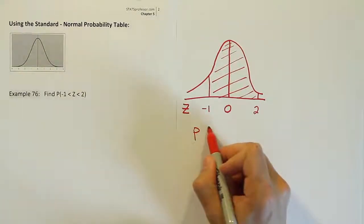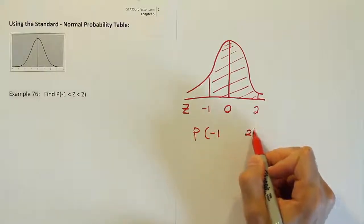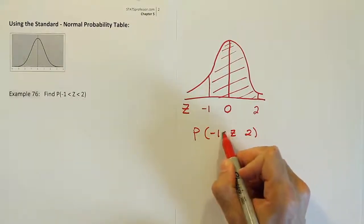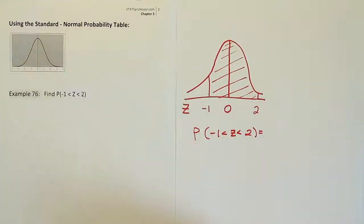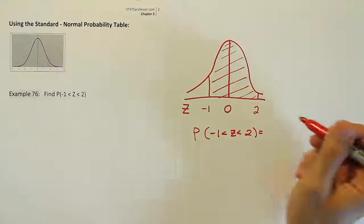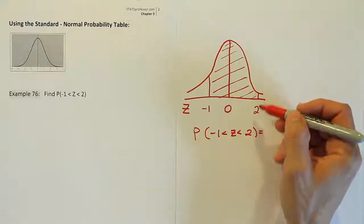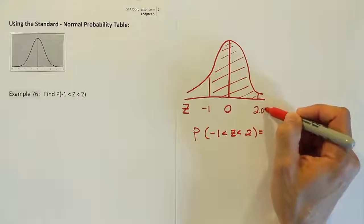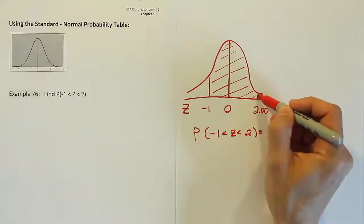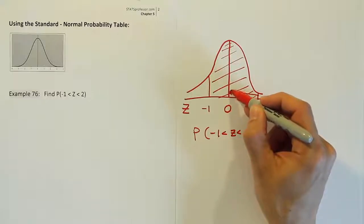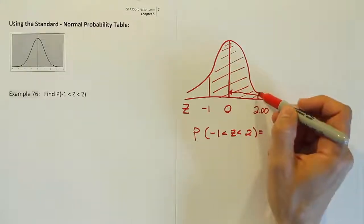So the probability that we're between negative 1 and 2 on the curve is equal to what? Well, let's think about what we have to do now. We're going to have to use a z-table, and let's think about what we're going to get from the table as we go to the table. If I look up 2.00 on the table, remember, it always gives me the area from the number I look up to the center, and that's it. That's all it'll give me. So I'm going to get this area.